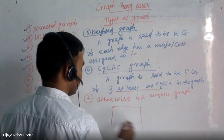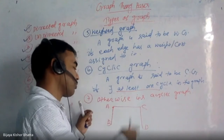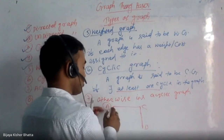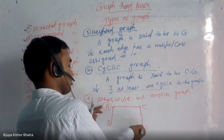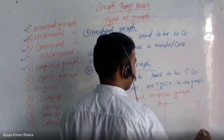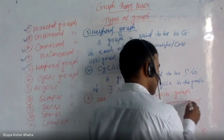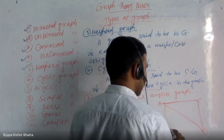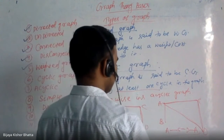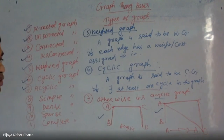Let's take an example: graph A, B, C with directed edges — can I start from A and come back to A? No, there is no such path, so this is an acyclic graph. But if I draw A, B, C, D with edges such that A goes to C, C goes to D, D goes back to A — then there exists a cycle: A to C, C to D, D to A. Since this contains a cycle, it is a cyclic graph.